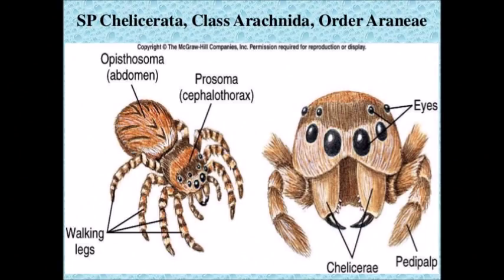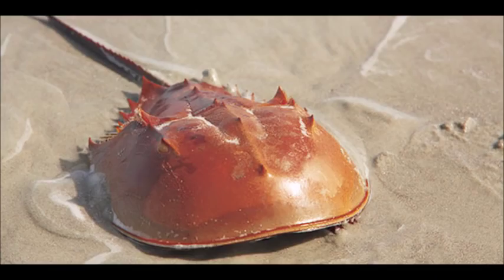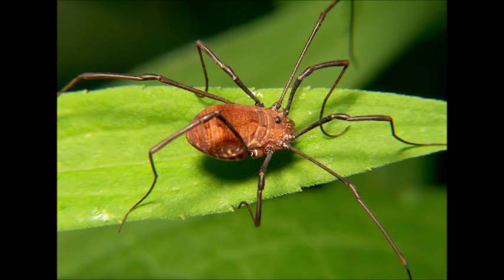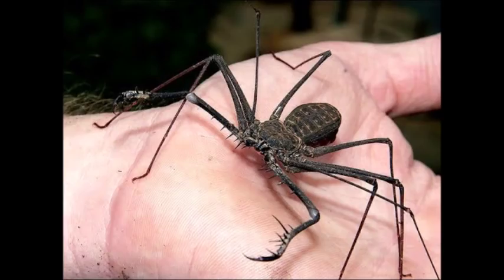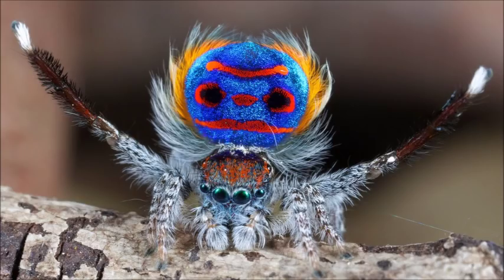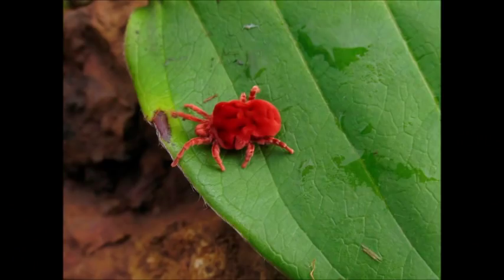Within Arthropoda is a clade called Chelicerata, whose members are defined by having appendages in front of their mouths, making scorpions chelicerates. Other chelicerates include horseshoe crabs, harvestmen, false scorpions, whip scorpions, spiders, and mites.